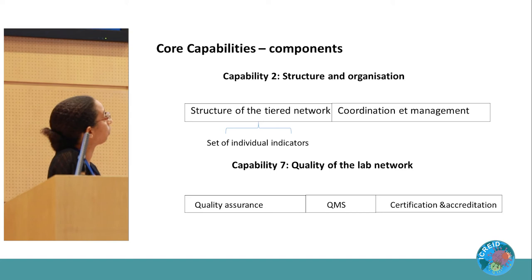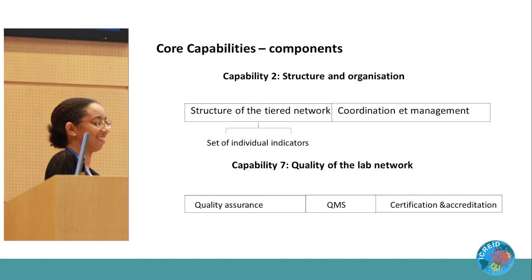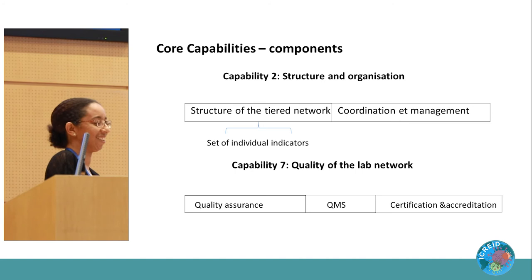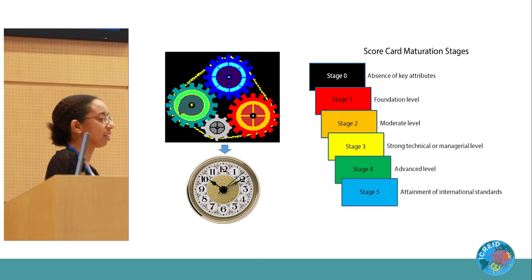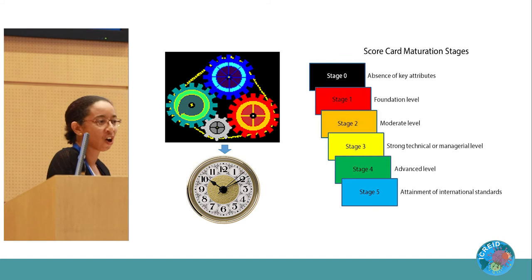For each core capability, specific components are defined. For example, capability two — structure and organization — includes structure of the tier network, and coordination and management. Each component is further defined by a subset of measurable key indicators. Importantly, it is not enough to have individual components in place — they also have to function together. Like a clock: remove one piece, or have one piece stuck, and the clock stops working. The assigned score determines a maturation stage indicating how functional the national laboratory network is.